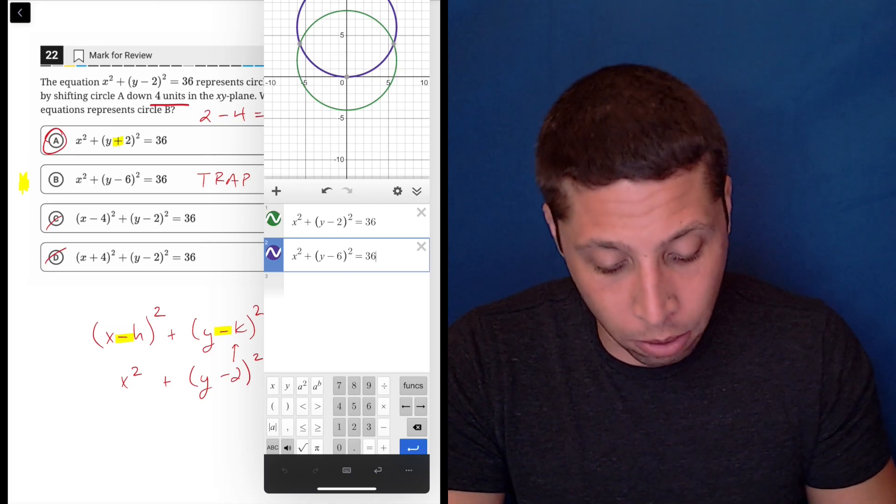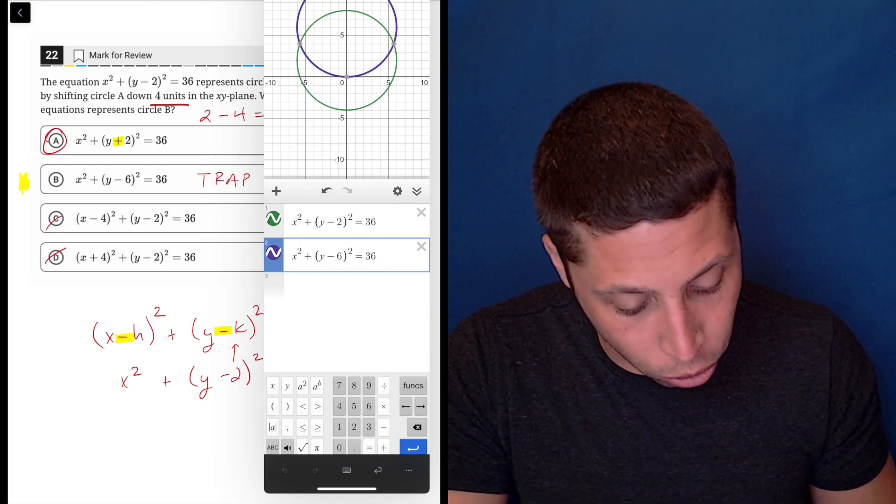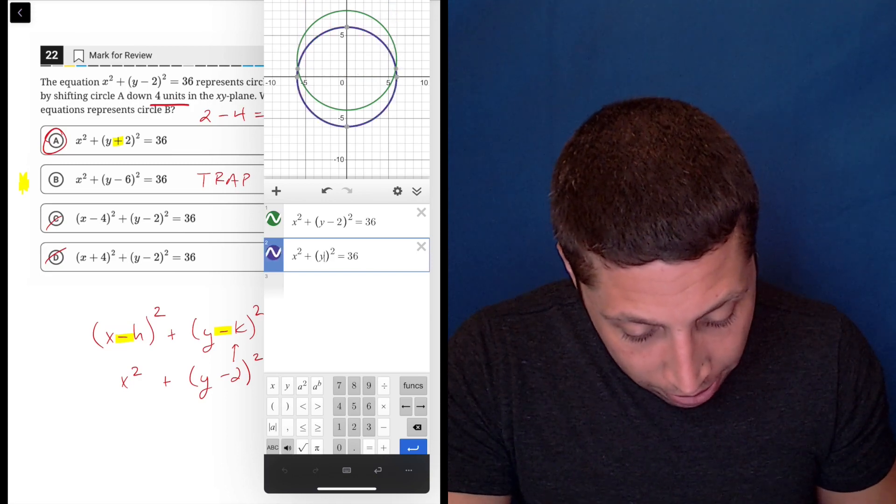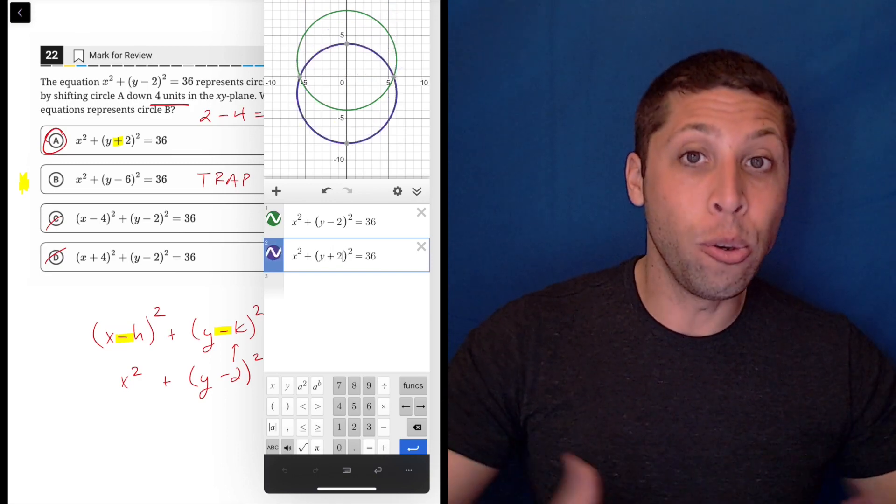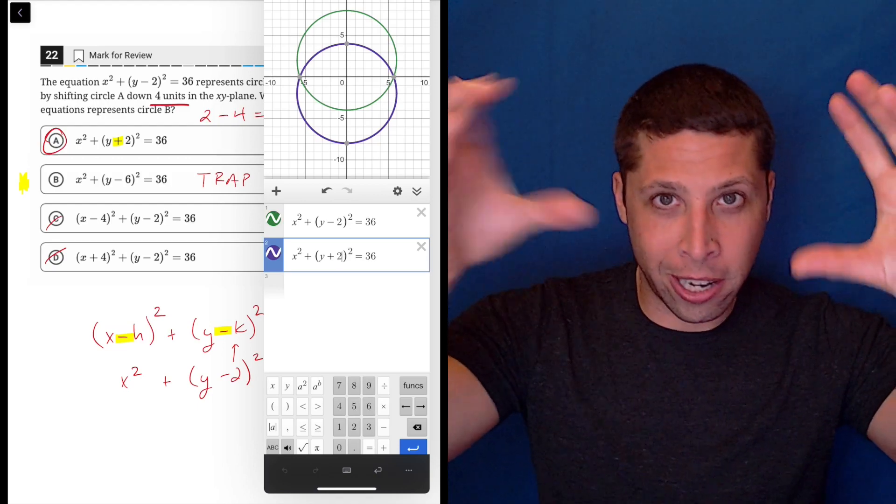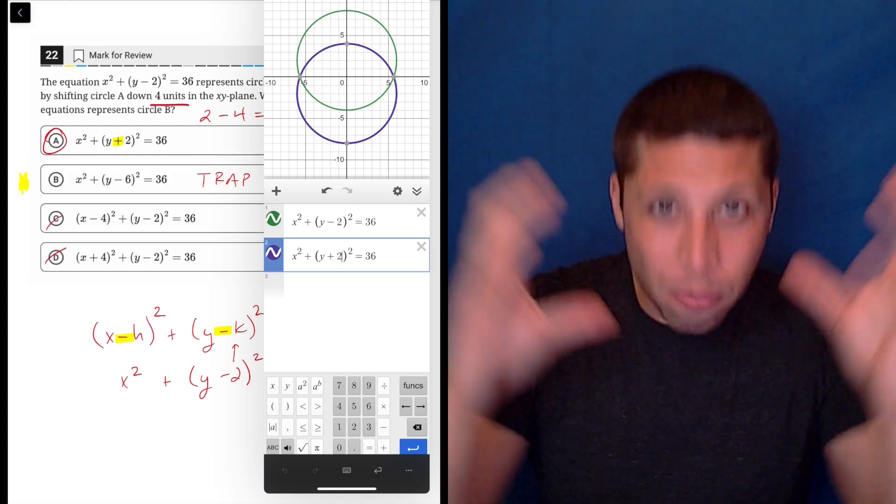Then you might be like, okay, well, I don't know. Let's try some of the other choices. The easiest one to try without changing anything is choice A. So now let's make that plus 2. And now you can see, yes, the green is here. The purple is lower. So they've moved it down.